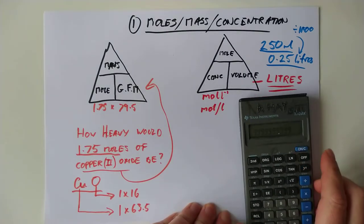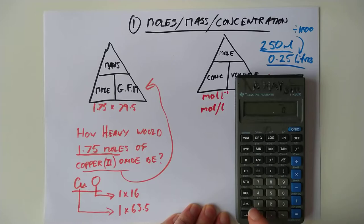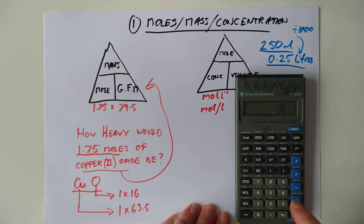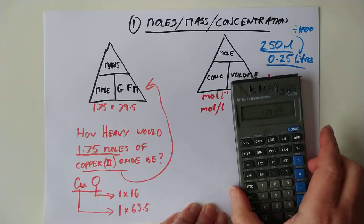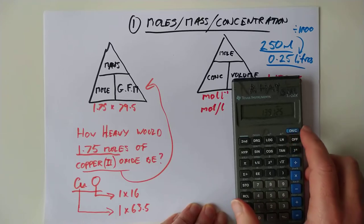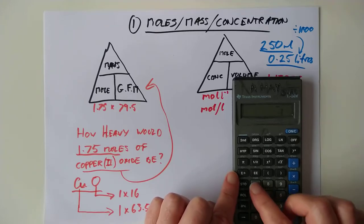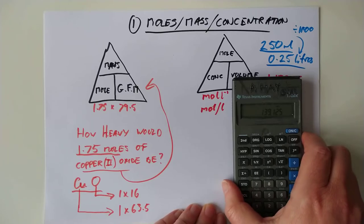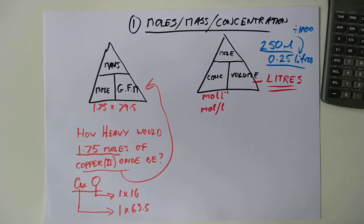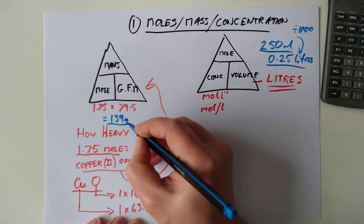I just realized I'm going to need to go and get a calculator. So my vintage calculator here from 1994. 1.75 times 79.5 gives us 139 grams. There you go. Question done.